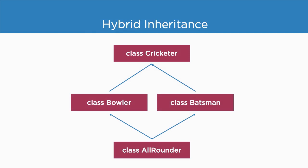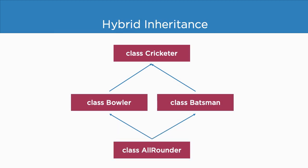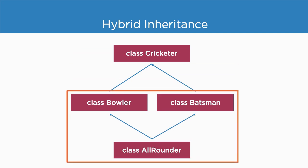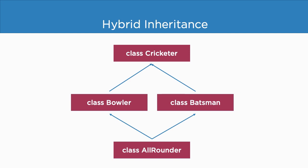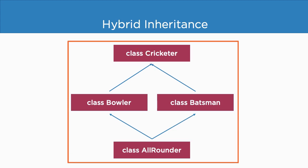Lastly we have hybrid inheritance. This type of inheritance is the mixture of two or more types of inheritance. For example, the upper half represents hierarchical inheritance because we have one superclass and multiple subclasses, but the bottom half represents multiple inheritance because we have one subclass and multiple superclasses. So when two or more types of inheritance are combined, it is known as hybrid inheritance. In this example, a bowler and a batsman are cricketers, so they inherit from the class cricketer, and an all-rounder in cricket is both a bowler and a batsman — so this inheritance actually makes sense in the world of cricket.